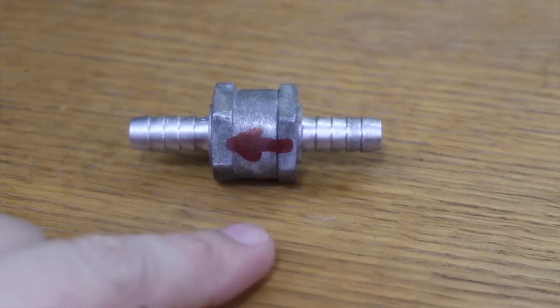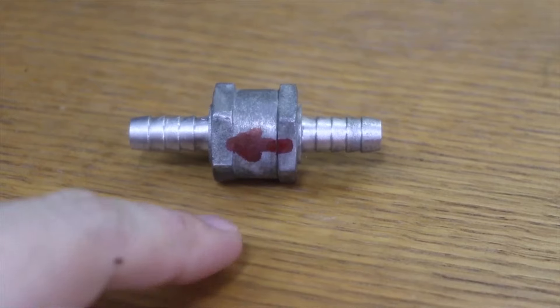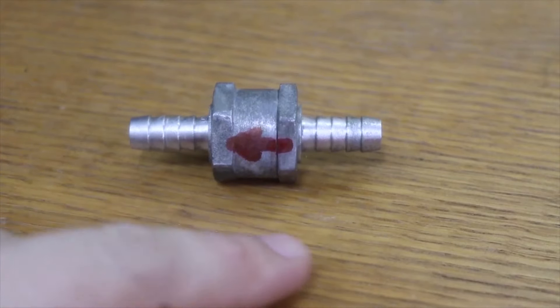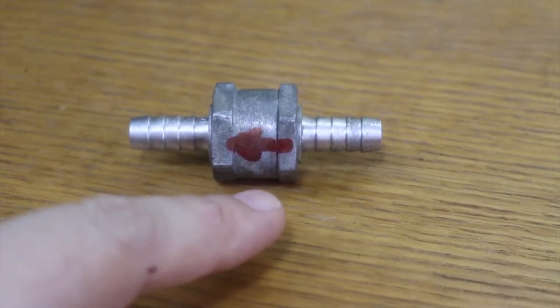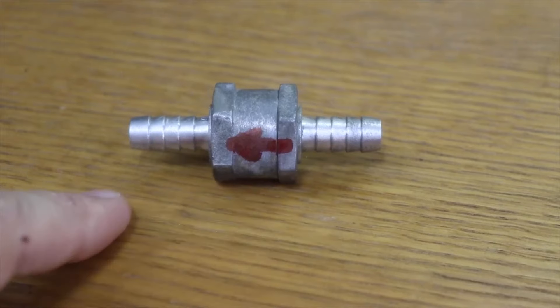The arrow on the non-return valve indicates the direction in which it allows the diesel to flow inside it. In this case it always has to point towards the high pressure pump. If we put it upside down the engine will not start.